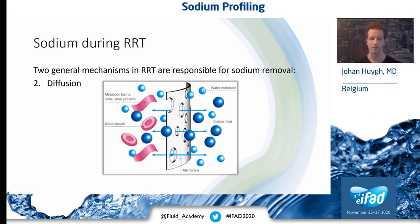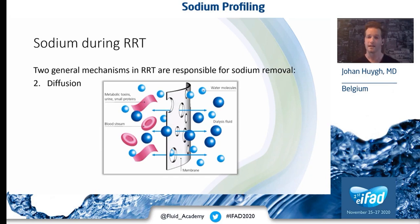This is partially negated by the Gibbs-Donnan effect, whereby the negatively charged proteins inhibit sodium travelling across the membrane. Theoretically, the dialysate sodium concentration should be 2% higher than that of plasma to prevent sodium loss. But as described, this is always different from patient to patient.